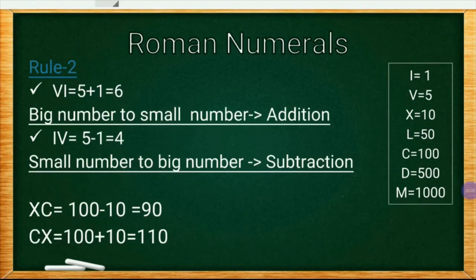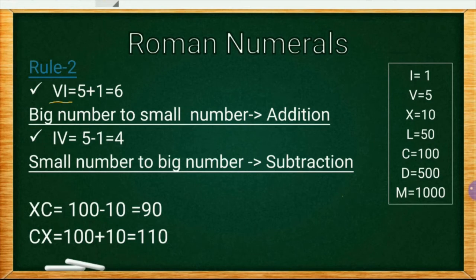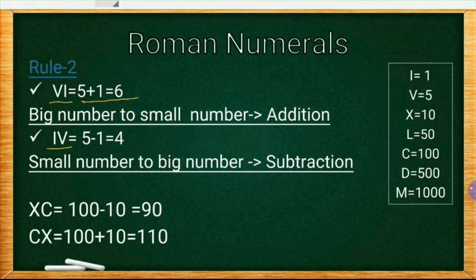Now proceed to Rule 2: when we write a bigger number before a smaller number, we make addition. For example, VI: V is 5, I is 1, V is greater than I, so we add — 5 plus 1 equals 6. When we write a smaller number before a bigger number, we make subtraction. For example, IV: I is smaller than V, so we subtract — V minus I, that is 5 minus 1, equals 4.